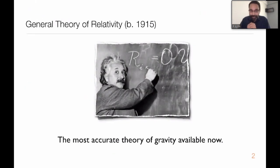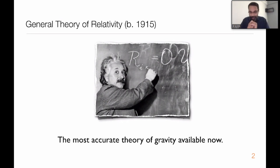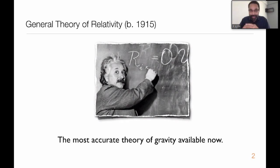Einstein's theory of general relativity is the most accurate theory of gravity available to us right now. It is one of the cornerstones of modern physics. We take it as granted for most of the time, but it's a very important thing - it's a basic tenet of science that we always re-verify our basic assumptions.